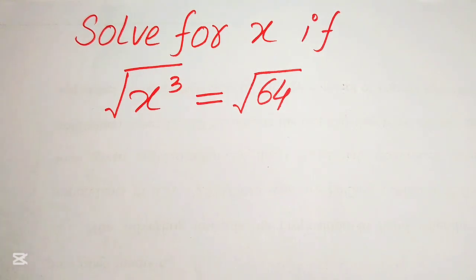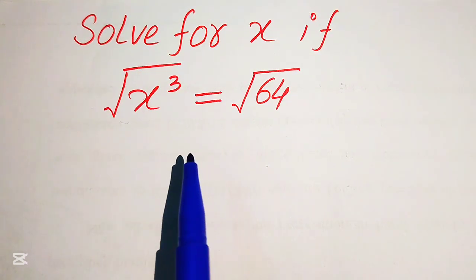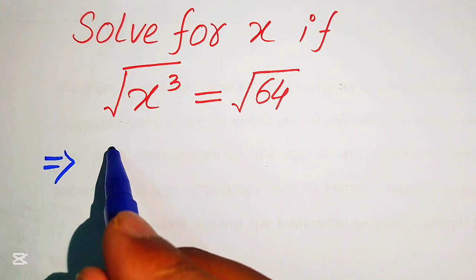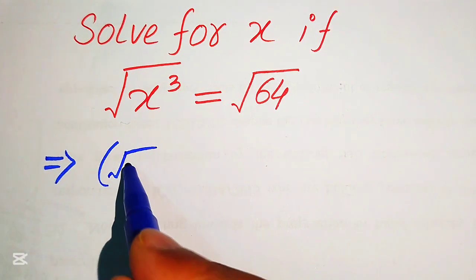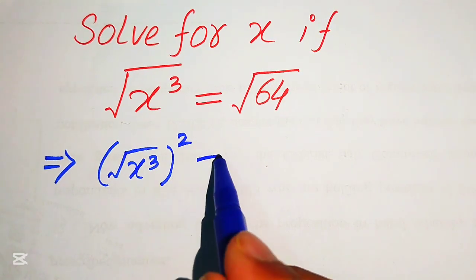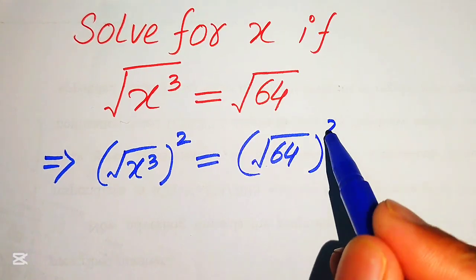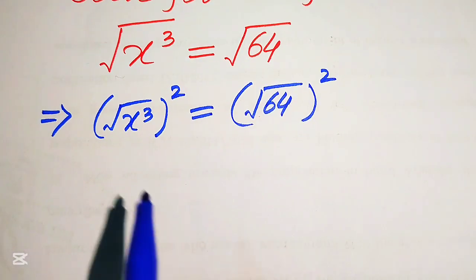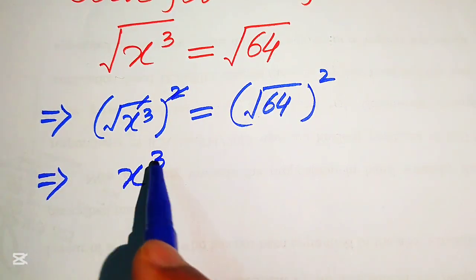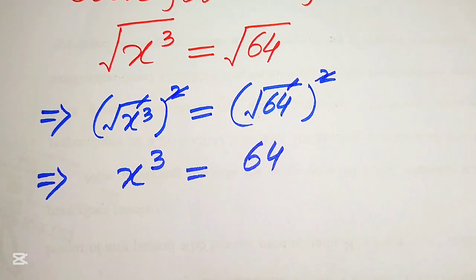In order to find the value of x, first we need to eliminate the square root sign on both sides. For this we will square both sides. When we square both sides, the square root of x cubed whole squared equals the square root of 64 whole squared. The square roots are eliminated and we obtain x cubed equals 64.